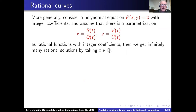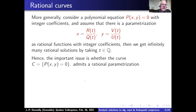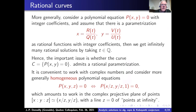In algebraic geometry, one is usually very interested in rational curves. If you have a plane curve given by a polynomial equation P(x, y) = 0 with integer coefficients, and a parametrization by rational functions x = R(T)/Q(T), y = V(T)/U(T) with integer coefficients, then you get infinitely many rational points by taking rational values of the parameter T. It is convenient to work with complex numbers because the field is algebraically closed and things are simpler than over the reals.